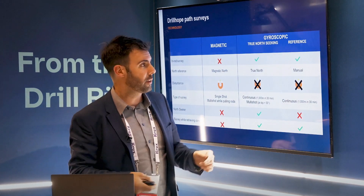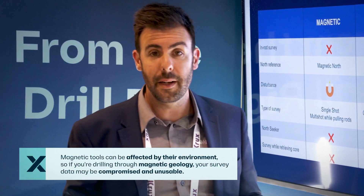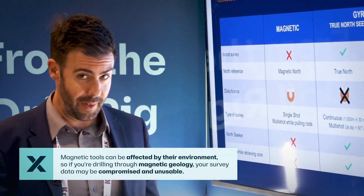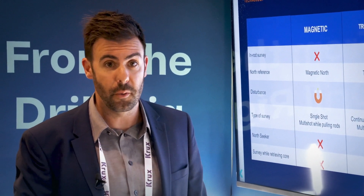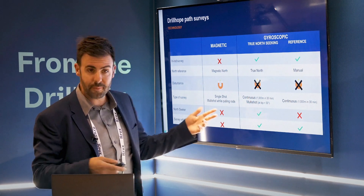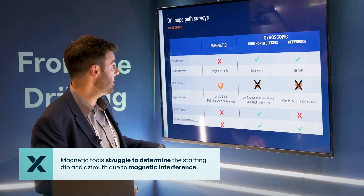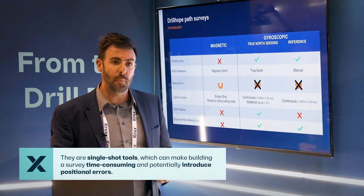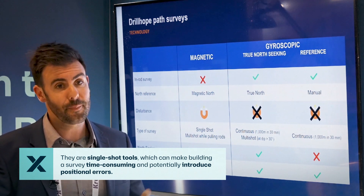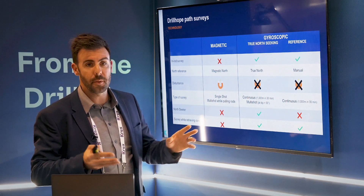Focusing on magnetic tools — at IMDEX we have the EasyTrack. The real issue with magnetic tools is they are affected by magnetic environments: if you're drilling into geology that is magnetic, your survey data will be compromised. Other inconveniences of magnetic tools compared to gyroscopes include: you can't survey while retrieving core, they're not able to determine the starting dip and azimuth because of magnetic interference, and they are single- or multi-shot tools which can be very time consuming to build a survey from, and positional error can be affected.